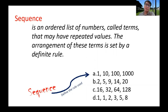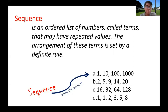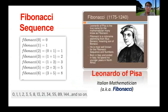In sequence D, the terms are 1, 1, 2, 3, 5, and 8. The third term is the sum of the first and second terms. The next term, 3, is the sum of the second and third terms. Five is just 3 plus 2, the sum of the previous two terms. Eight is the sum of the previous two terms, 5 and 3. This sequence is called the Fibonacci sequence.